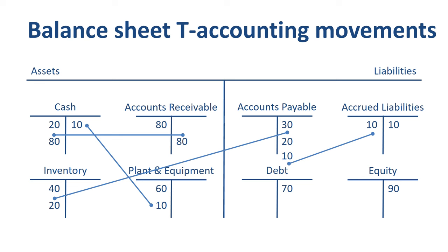The last transaction in this example is paying down part of the loan we have with the bank. We use some of our favorable cash position to pay down debt. To record this, we credit cash as money is moving out of our account, and we debit debt.